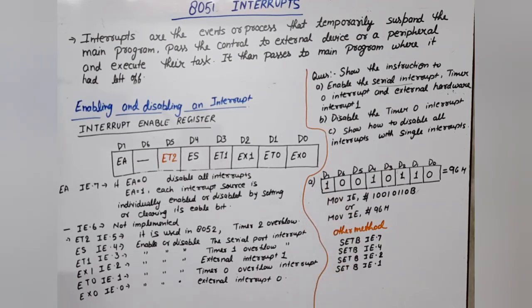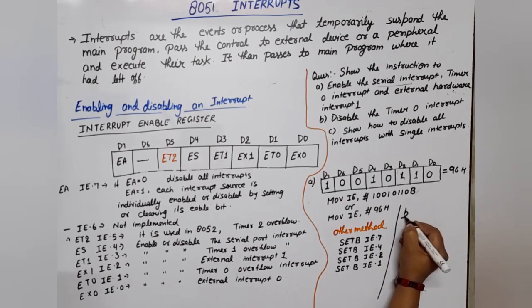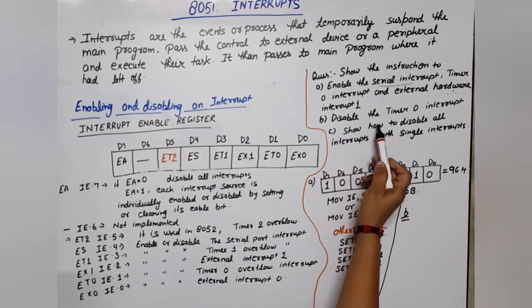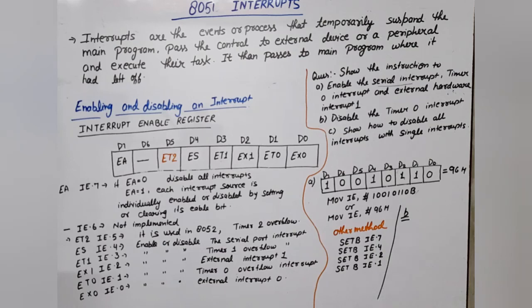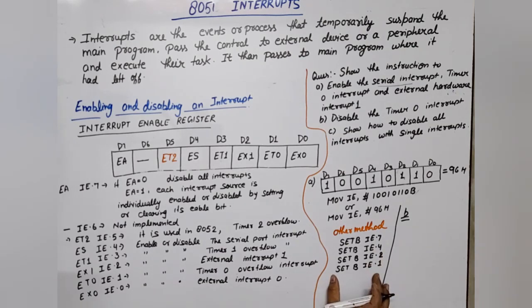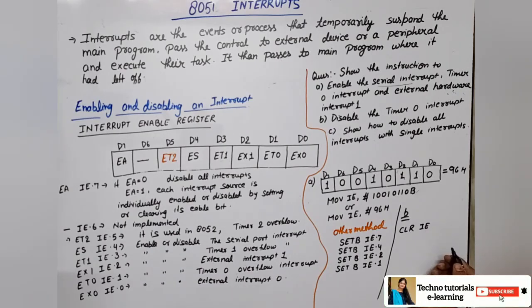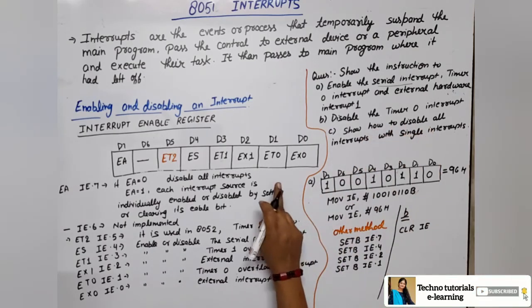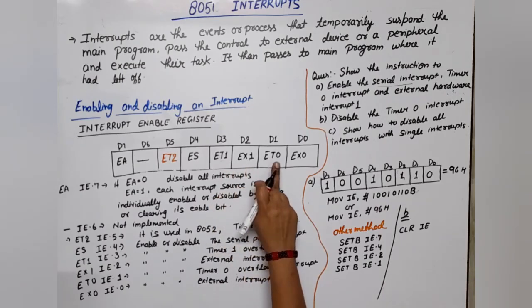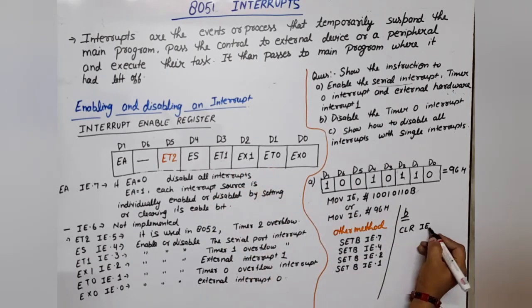That completes Part A. Now for Part B: disable the Timer 0 interrupt. To disable or reset a bit, we use the CLR instruction. For Timer 0, the bit is IE.1, so the instruction is: CLR IE.1. That clears the timer 0 enable bit, disabling the timer 0 interrupt.